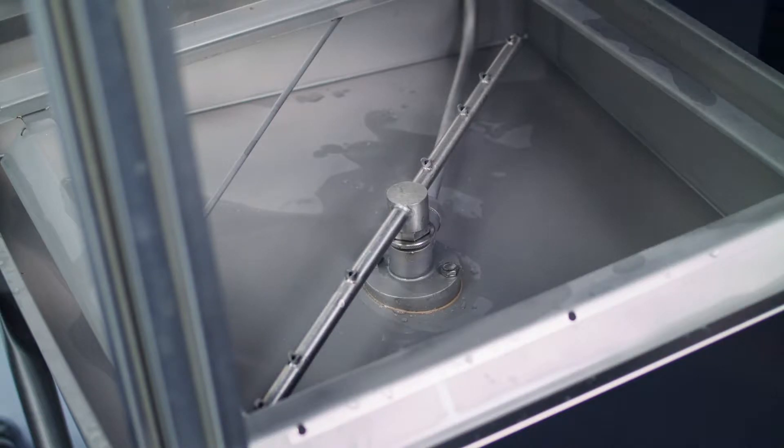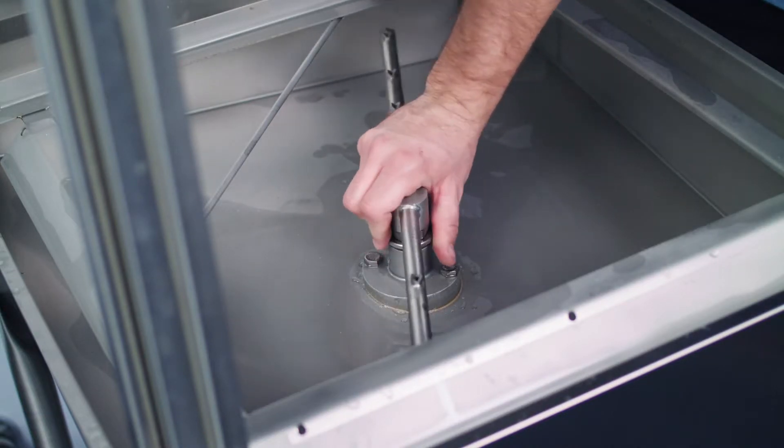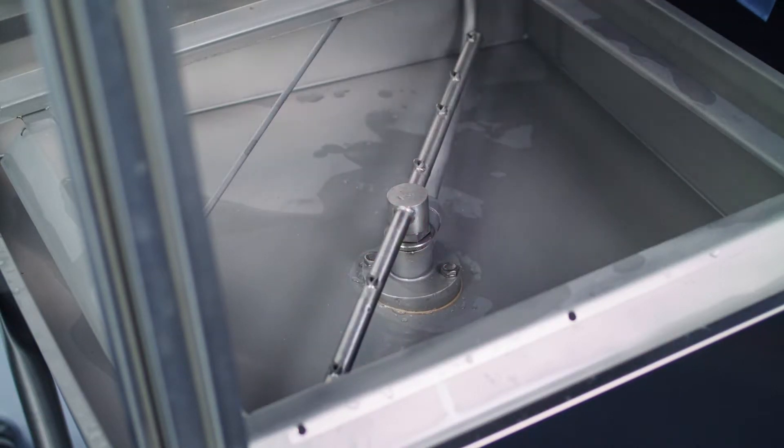Install the drain stopper and inspect the wash and rinse arms. The arms and end caps should be screwed securely in place and able to rotate freely.